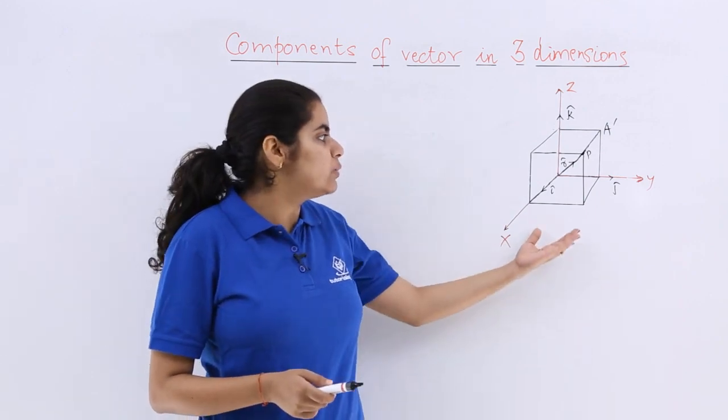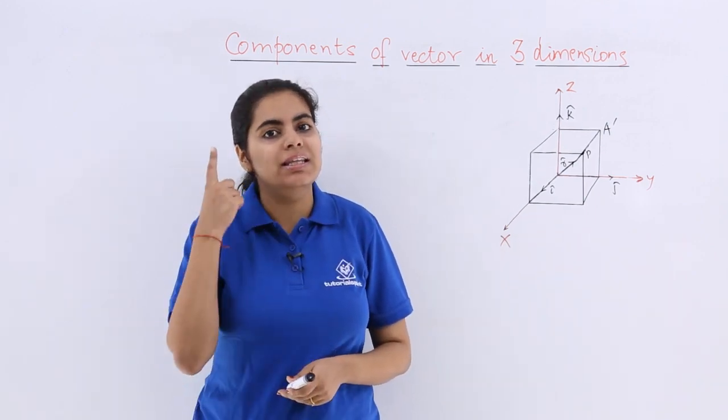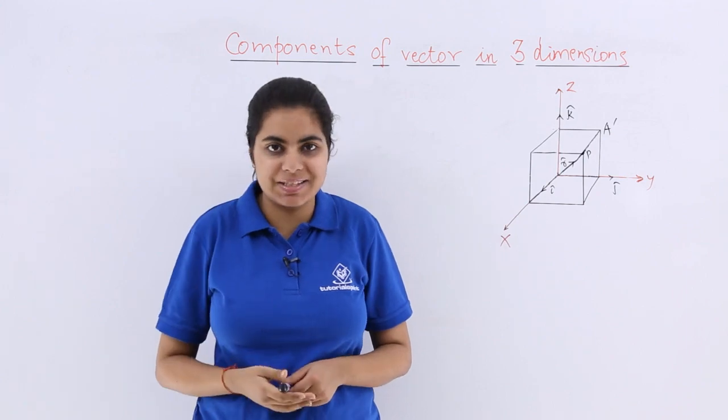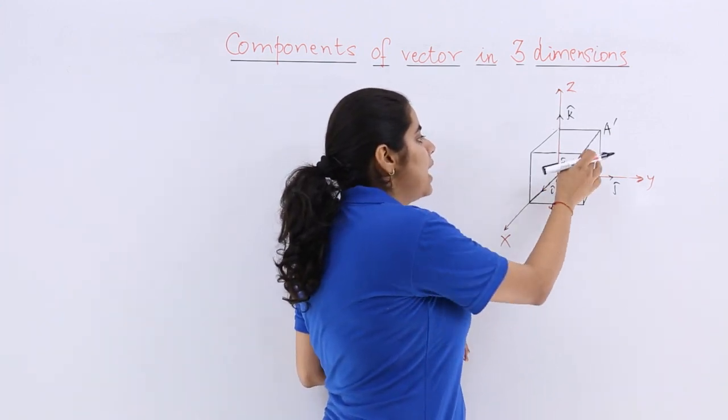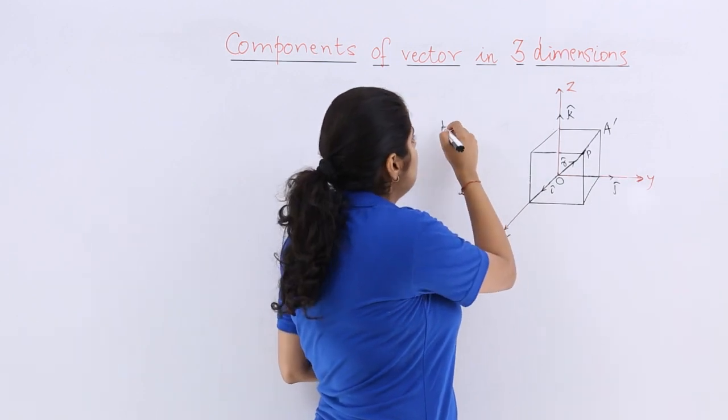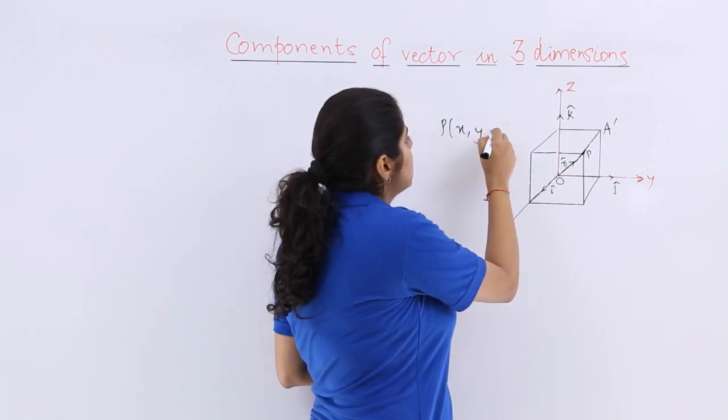So in three dimensions you can see that we will be having three axes in the picture: the x axis, y axis, and the z axis. So let here be a point O and I have point P here. Now the P point has the coordinates x, y, z.